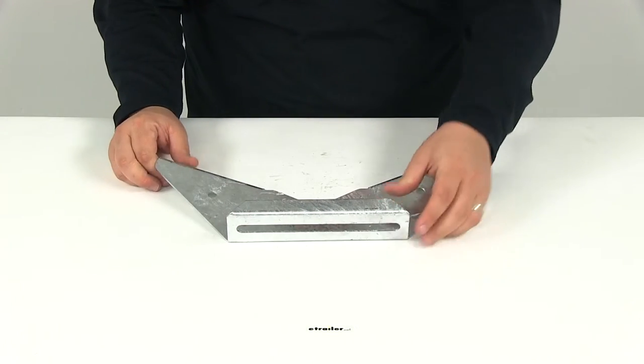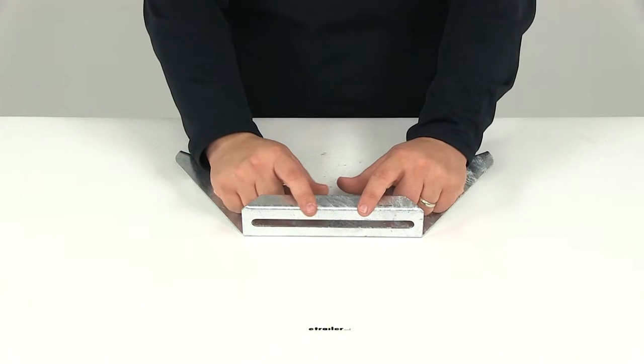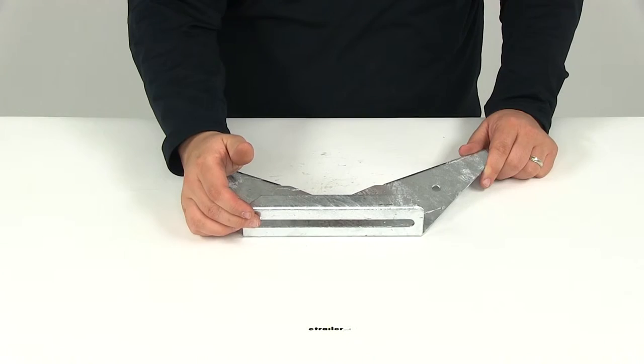The mounting slot dimensions for the long mounting slot here that gets mounted onto the trailer frame or crossmember is seven and a half inches long and measures a half an inch in width.